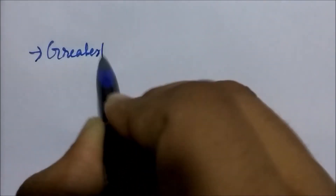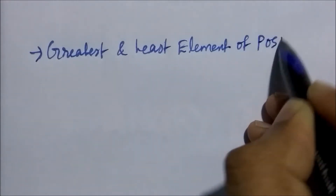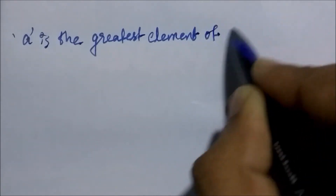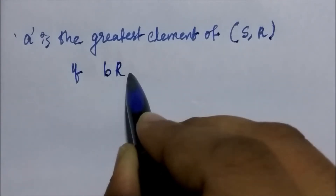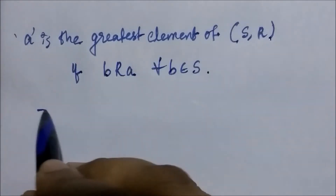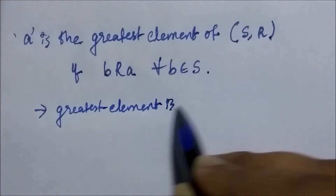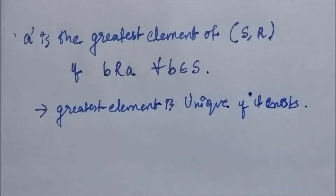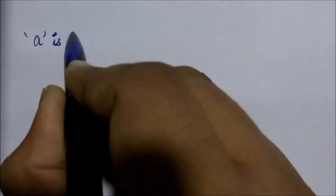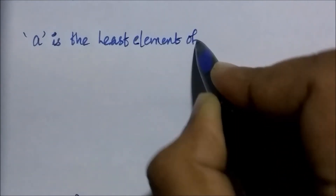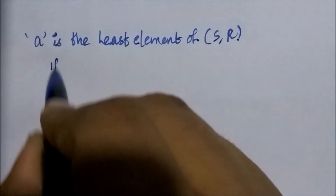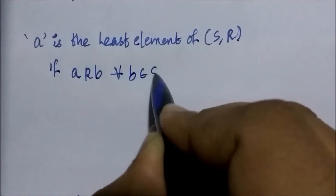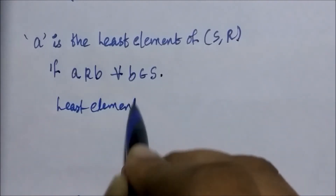Now let's see what is a greatest and least element of the partially ordered set. Sometimes there is an element in the poset that is greater than every other element — such an element is called the greatest element. The element a is the greatest element of (S, R) if b is related to a for all b belonging to S. Greatest element is unique if it exists. Similarly, a is the least element if a is related to b for all b belonging to S. The least element is also unique if it exists.